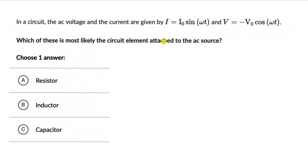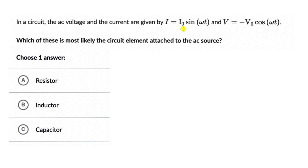The job is to figure out the circuit element. If we know whether the current is leading, lagging, or in phase with the voltage, we can identify the element. For a resistor, current and voltage are in phase — these two functions clearly are not in phase. In an inductor, current lags voltage by 90°; in a capacitor, current leads voltage by 90°. To compare, the first step is to bring both functions to the same trigonometric form — both sine or both cosine — then compare their phases.